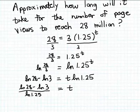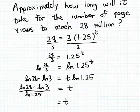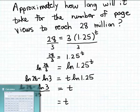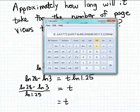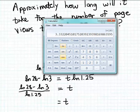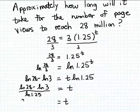It would be better to have a decimal approximation for this exact solution so that we can give a more meaningful answer. So let's estimate: natural log of 28 minus natural log of 3, divided by natural log of 1.25. First, the natural log of 28 is approximately 3.33, rounding to a couple of decimal places.